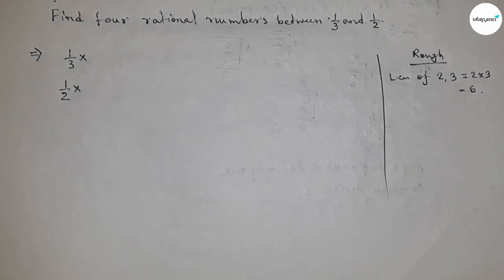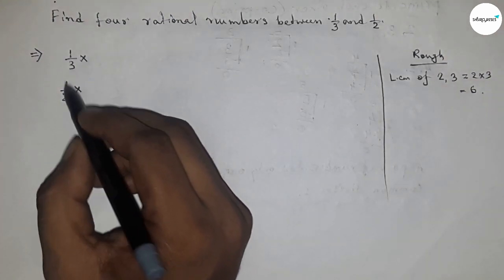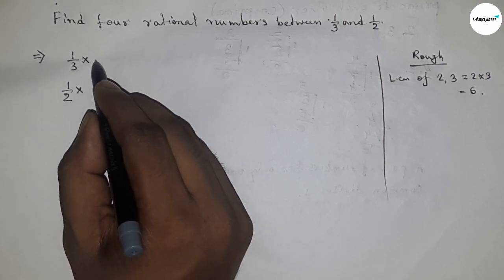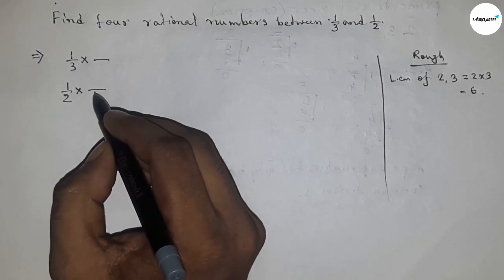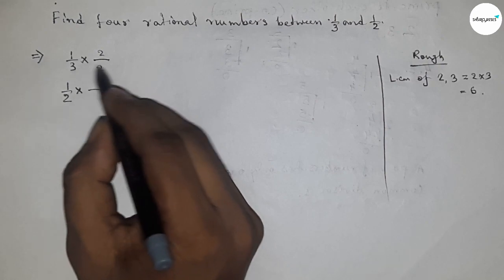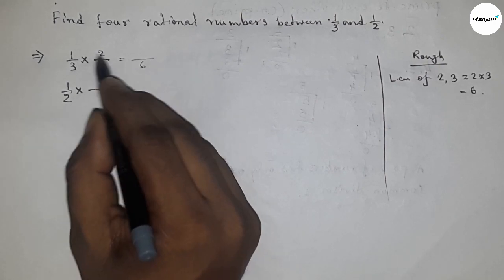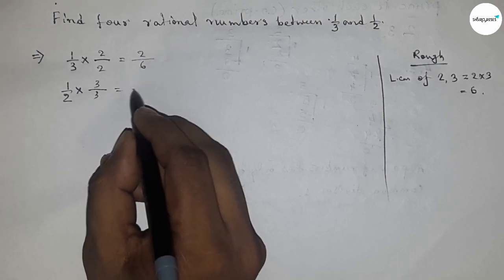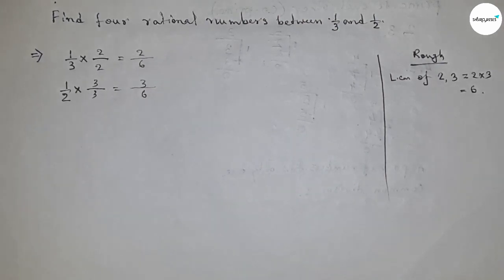What should we multiply to get 6 as the denominator? If we multiply 1/3 by 2/2, we get denominator 6, so this is 2/6. Similarly, if we multiply 1/2 by 3/3, we get 3/6.